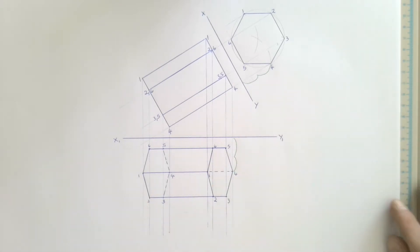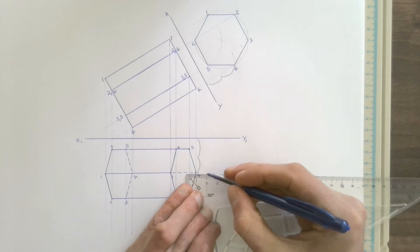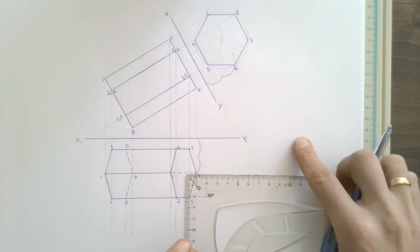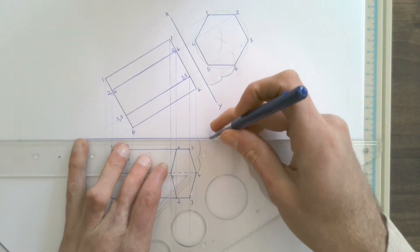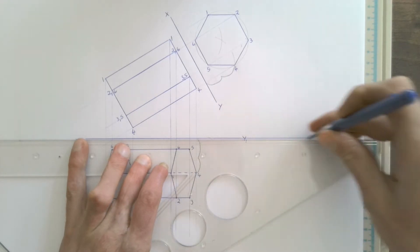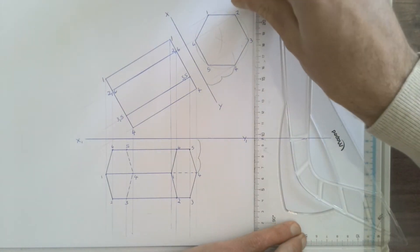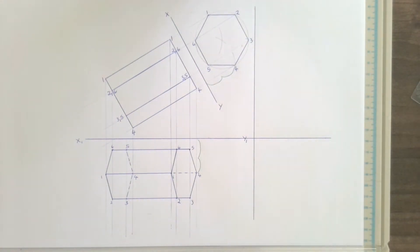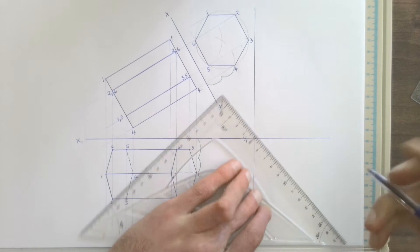Now we're going to draw the left view of this shape on the side over here. Normally we'd say you need a 10 millimeter gap between your view and your XY line, but we've got this auxiliary view in the way, so we're going to extend that and draw the left view much further away from the front view and top view. I'm going to extend this XY line and put another XY line over here to make sure it's out of the way of my auxiliary view. My 45-degree line is still going to go in from where those two XY lines come together.